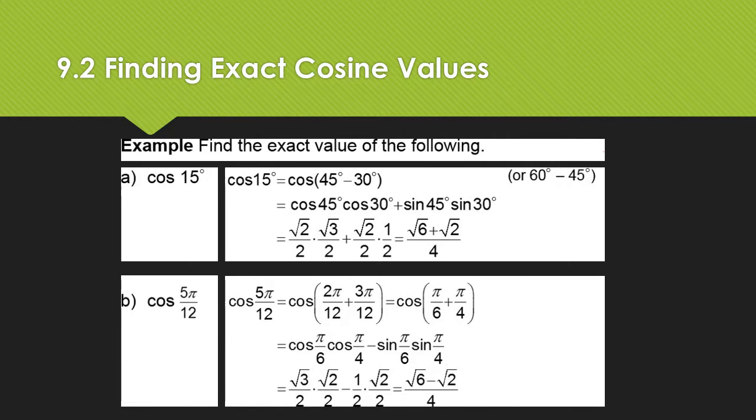For cosine of 15, we're going to use 45 minus 30, and then just put them into the formula. Notice it says you could use 60 minus 45. So there is more than one right way to do this. It's up to you, as long as you have a legitimate way of reaching the number you need. For 5 pi over 12, we're going to use 2 pi over 12 plus 3 pi over 12, which happens to be pi over 6 plus pi over 4. You can see how that works out there.